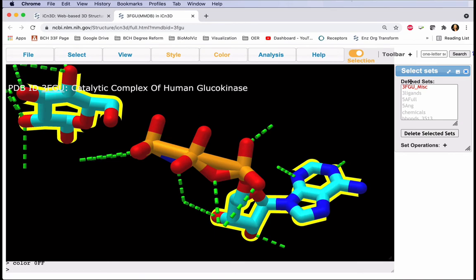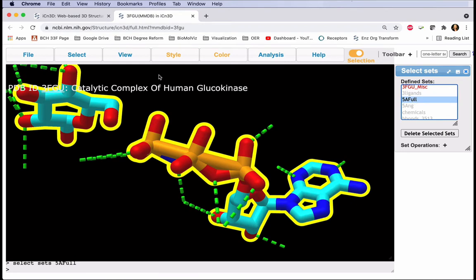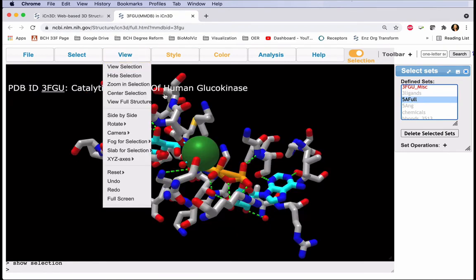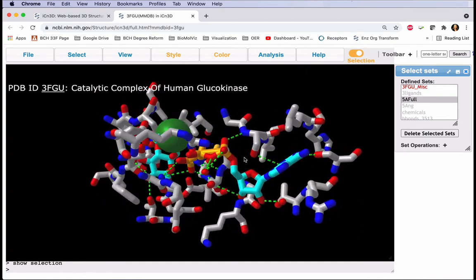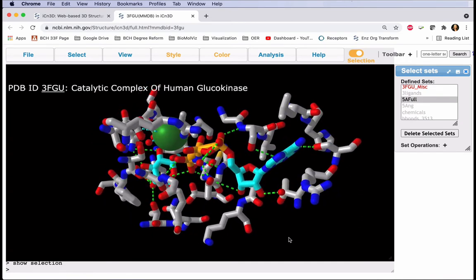To go back to our 5-Angstrom active site, click 5A Full in the Select Sets menu, and view the selection. Now we can clearly see our ligands among our protein residues.